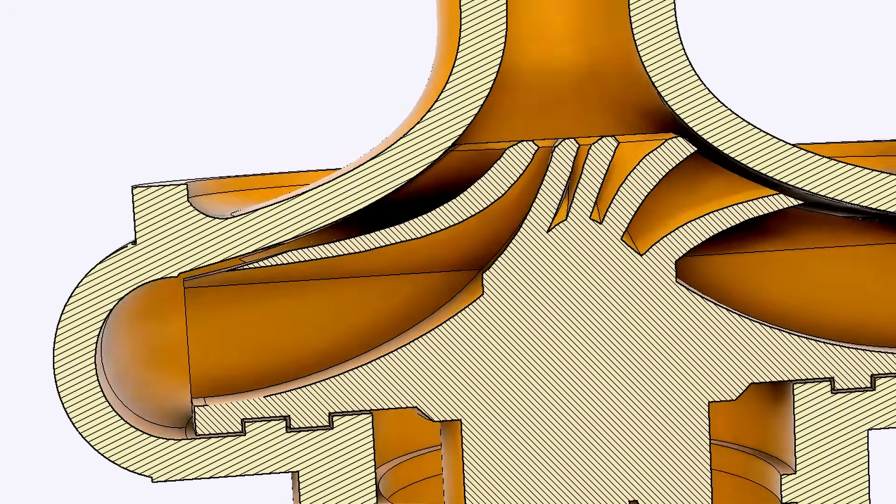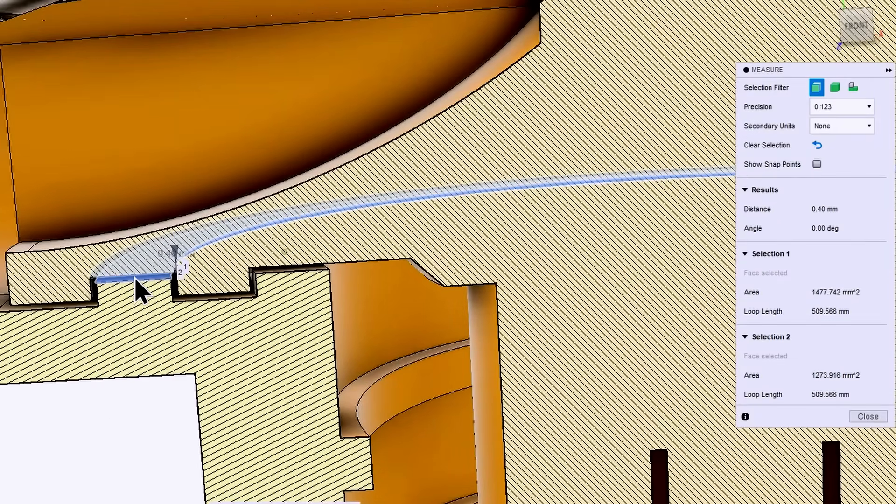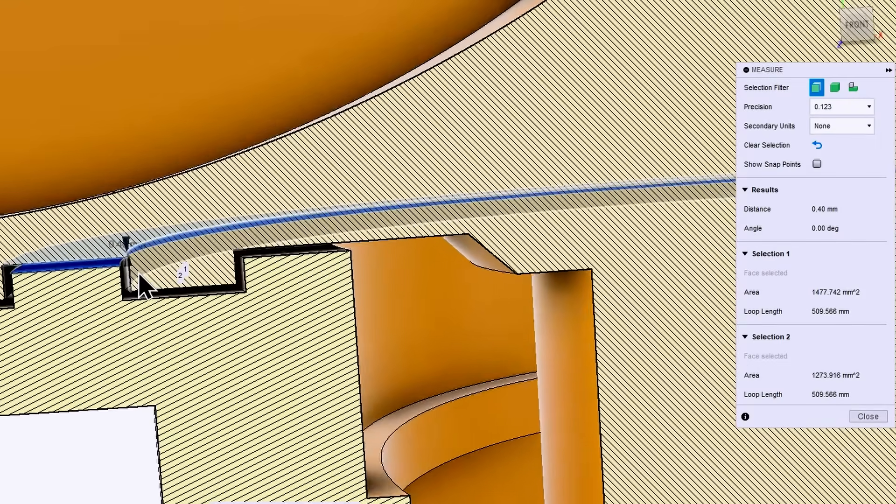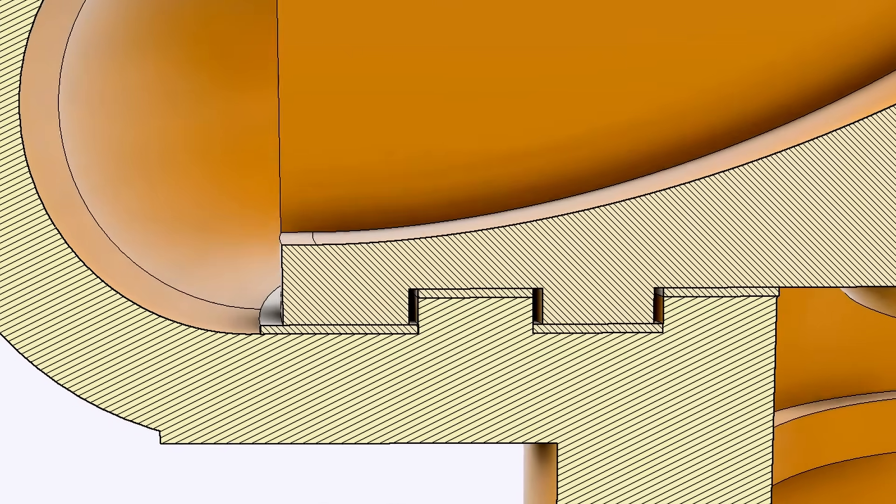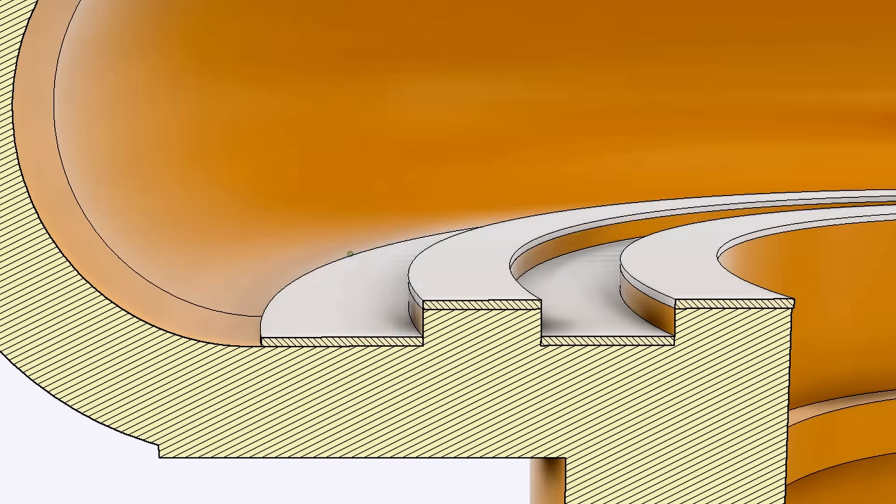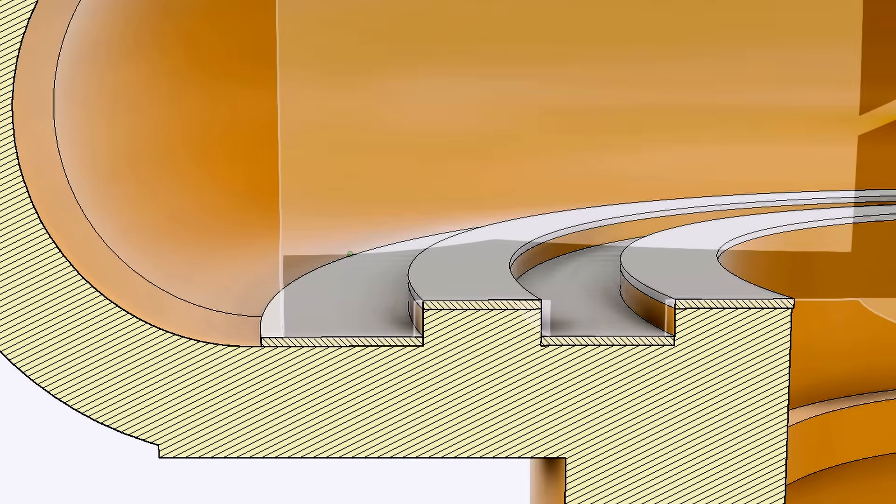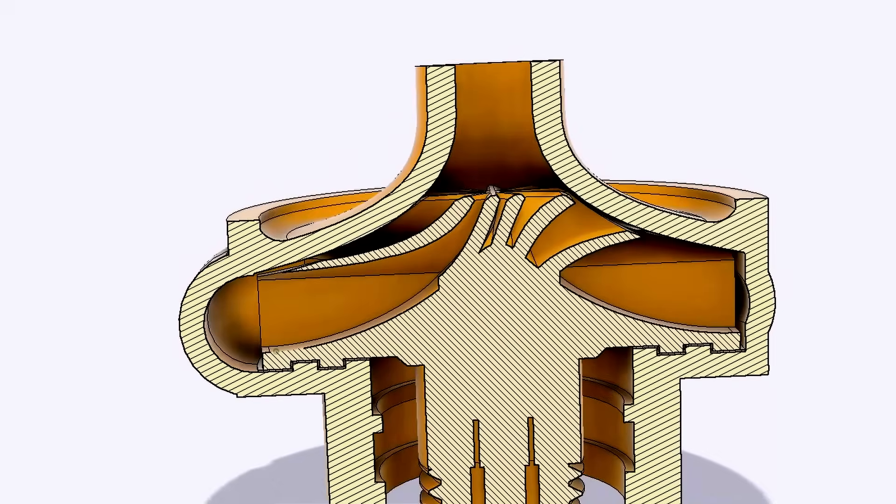The first step is to add the parts you want to print together in the same design with an interface separation of exactly two times the print layer height that you're going to print it with. For a 0.4 millimeter nozzle, this is typically 0.4 millimeters. Then create a new component in the design called interface that contains a body that fills the space between the interface you want to maintain. In this case, I will have two interface contact areas for the design at two heights in the design. Next, export all the components, excluding the interface component, then invert the selection and export the interface component.